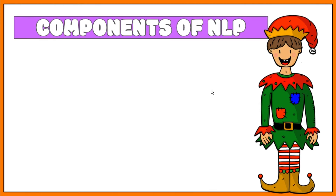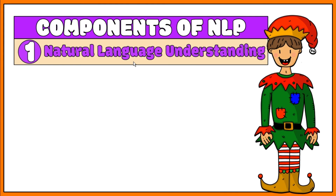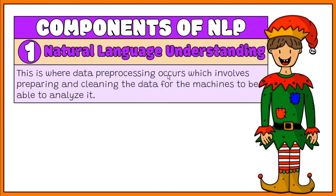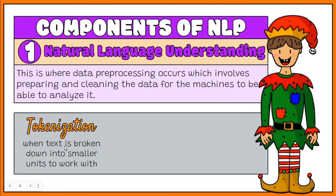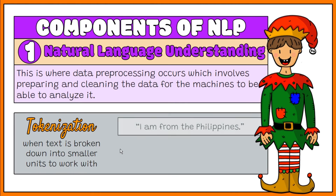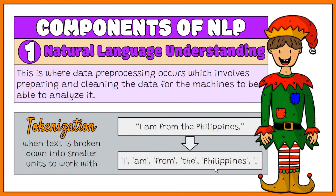There are two main phases or components of NLP. The first one is understanding the context, termed natural language understanding or NLU. This is where data pre-processing occurs, which involves preparing and cleaning the data for the machines to be able to analyze it. This puts data in a workable form and highlights features in the text that an algorithm can work with. One way this can be done is tokenization, where text is broken down into smaller units to work with.